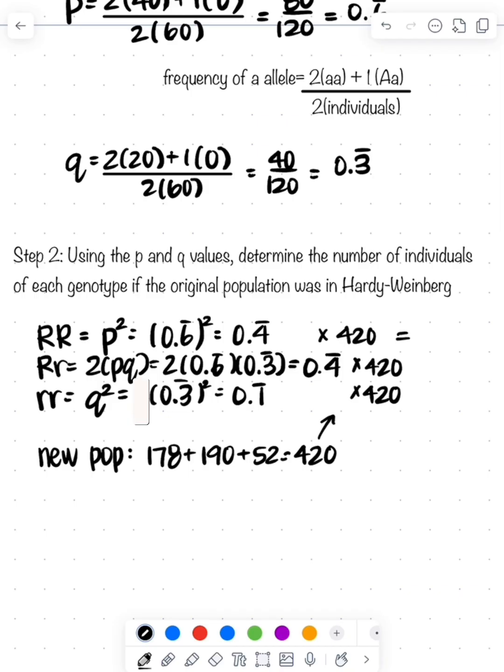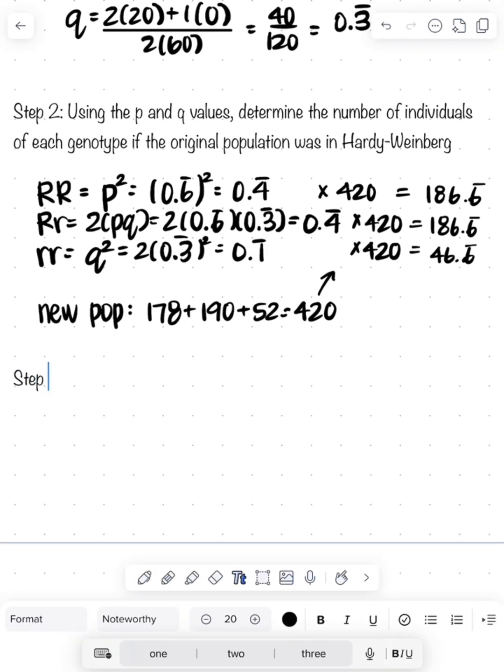If I take those frequencies and multiply by the total population, that tells me how many individuals are of each of the different genotypes. So I have 186 that are homozygous dominant, 186 that are heterozygous, and 46 that are homozygous recessive.